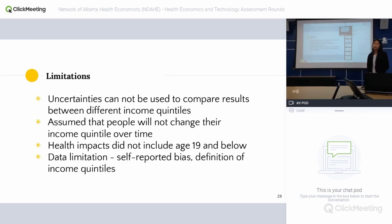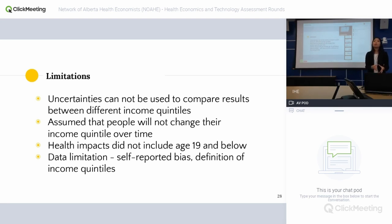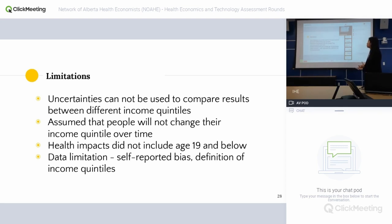Some limitations: results cannot be directly compared across income classes since the models are run separately. We also assume people will not change their income quintile over time — they enter the model in one quintile and stay there — which is a big limitation since many young people in the lower quintile may improve their economic status as they age. Additionally, the health data does not include those aged 19 and below, and the beverage consumption data is self-reported, which may introduce some bias.